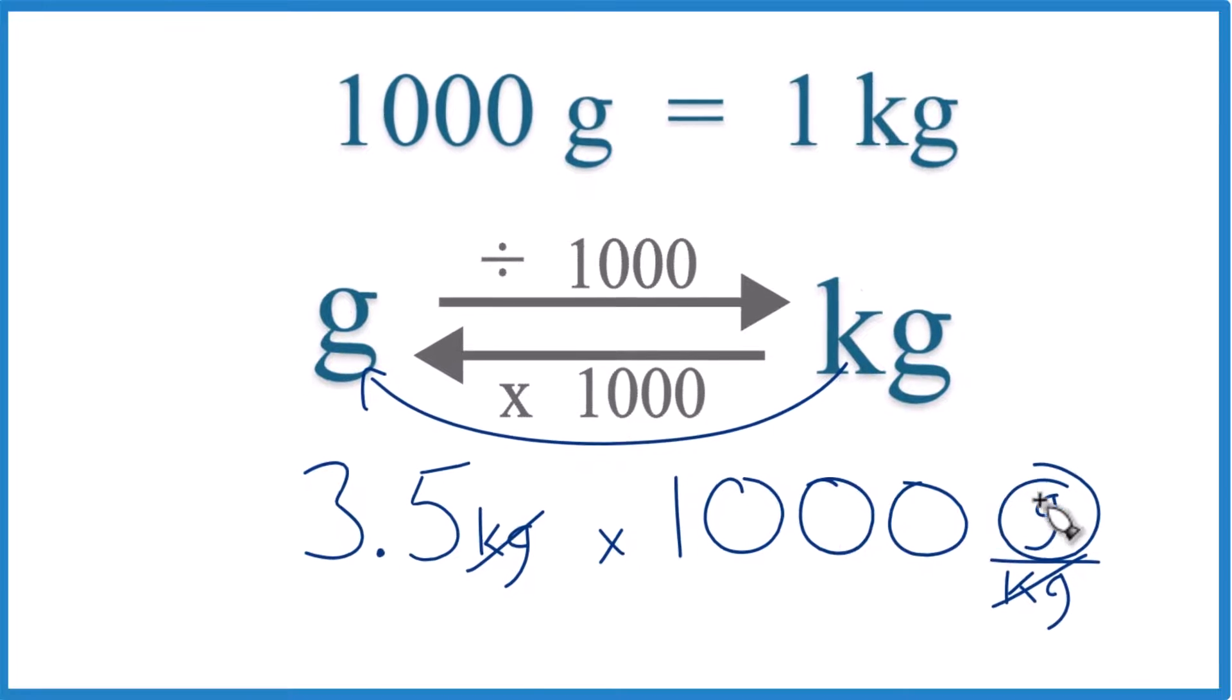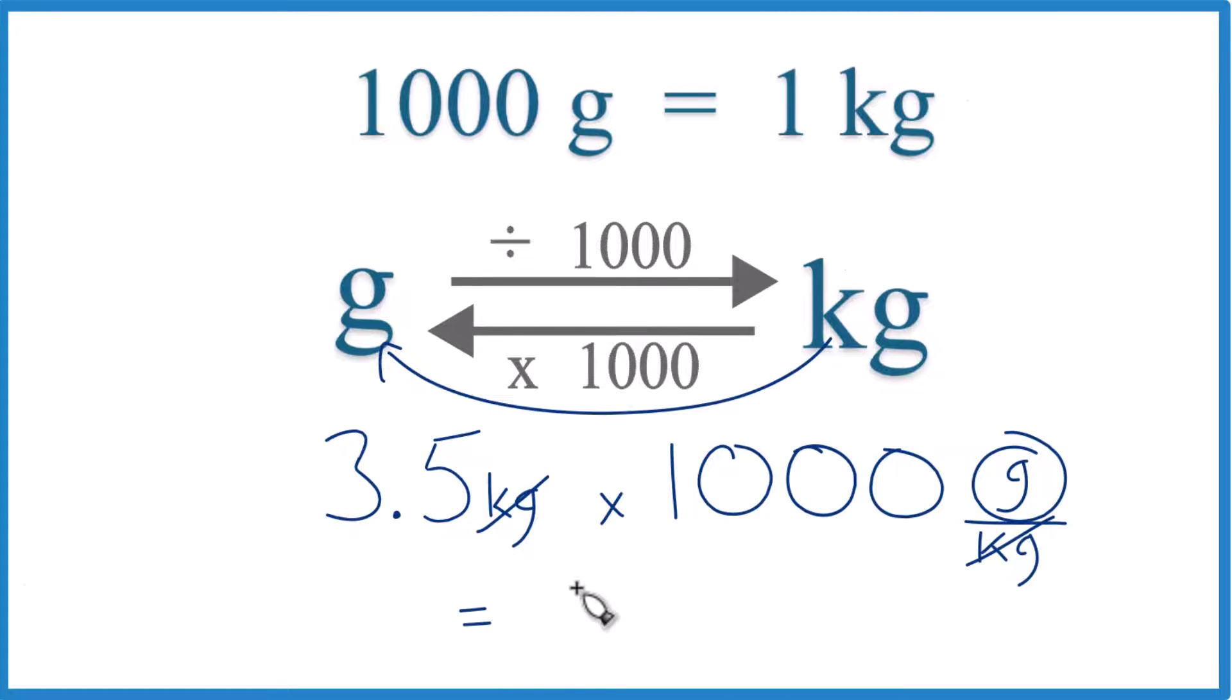So 3.5 times 1,000 grams, that gives us 3,500 grams.